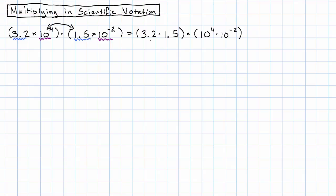Okay, 3.2 times 1.5, we can just do that. 5 times 2 is 10, 5 times 3 is 15, add in the one I carried and I get 16. 1 times 2 is 2, 1 times 3 is 3, add it all up. 2 digits after the decimal point.